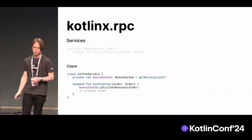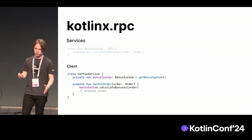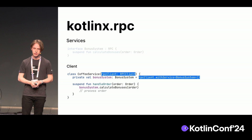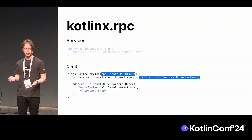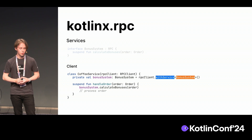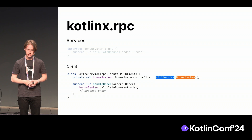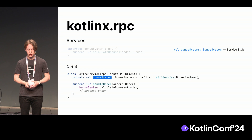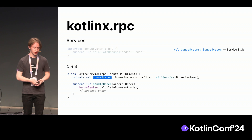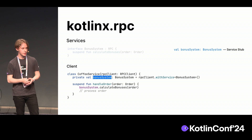That is our client code that we imagined, and with Kotlinx RPC it looks pretty much the same. The only thing that changes is we add a special entity called RPC client. This RPC client allows us to call a special method called withService — you provide the type argument of your service and you get a generated instance to use. This instance is called a service stub in RPC terminology, and you can use it as a regular implementation of the interface, calling the calculate bonuses function on it to make the RPC request.